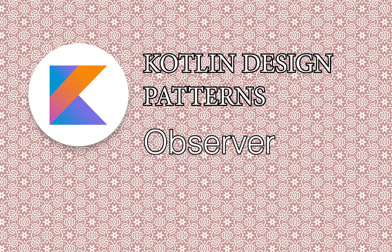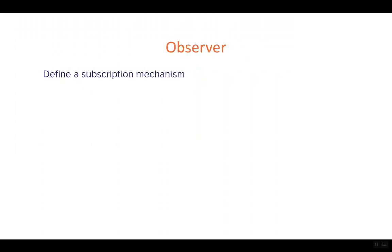In this video, we're going to get started with the first behavioral design pattern, which is the Observer. The Observer is quite a common design pattern simply because it's quite useful. It allows us to notify a set of subscribers of a certain event that might happen. At its core, it defines a subscription mechanism. Think about it in real life when you subscribe to a magazine or to some service — every time something is published, you get a notification because you are subscribed to it.